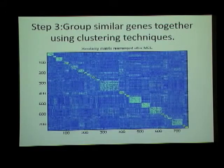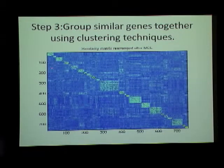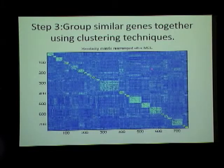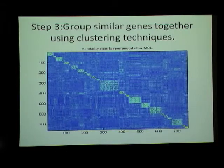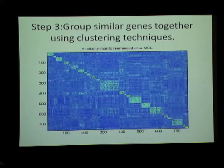The next step is to group all the similar genes together and move genes that are not similar further apart. That is done using clustering techniques. The light boxes represent genes clustered together — these are the clusters — and the dark parts represent lowly correlated regions while the bright parts are highly correlated. From here we get the clusters, and those clusters are brought together to form a functional map as was shown in the first picture.